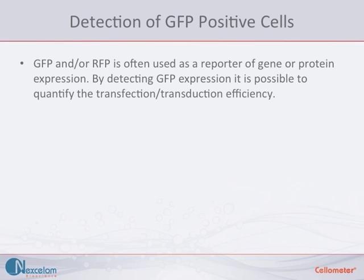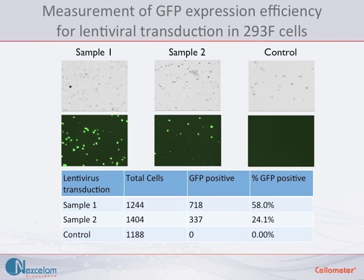In this case, GFP and RFP are used as reporters of gene or protein expression. By detecting GFP expression, it is possible to quantify the transfection or transduction efficiency in a population of cells.